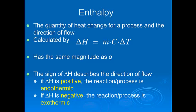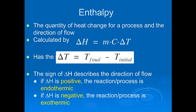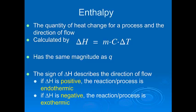Where delta H gets its sign from has to do with the sign of delta T. Because we always calculate delta T as final minus initial, if the final temperature is less than the initial temperature — in other words, if the thing is cooling off — then it must be releasing heat, and delta T will be negative, and so will delta H. So your sign for delta T determines the sign for delta H, and delta T follows whether or not the thing is cooling off and giving off energy, or heating up and taking in energy.